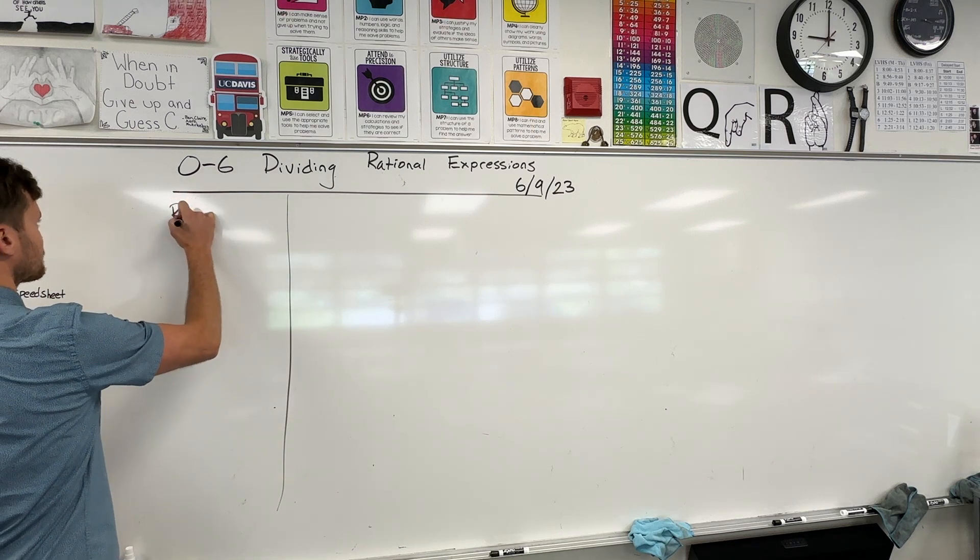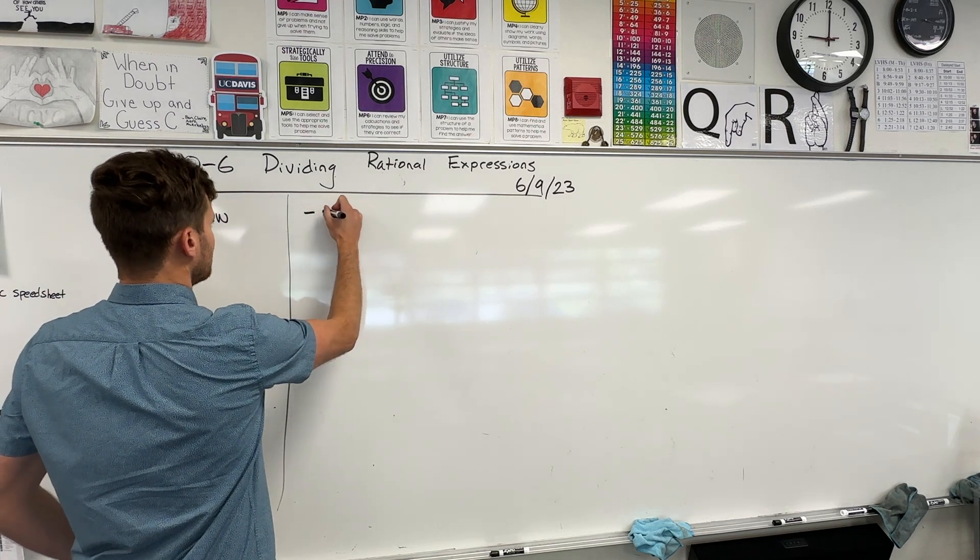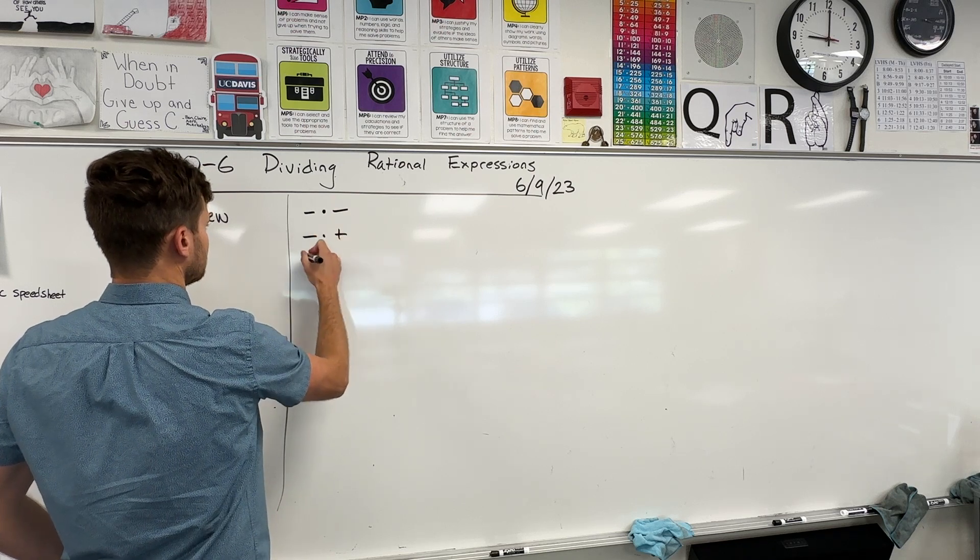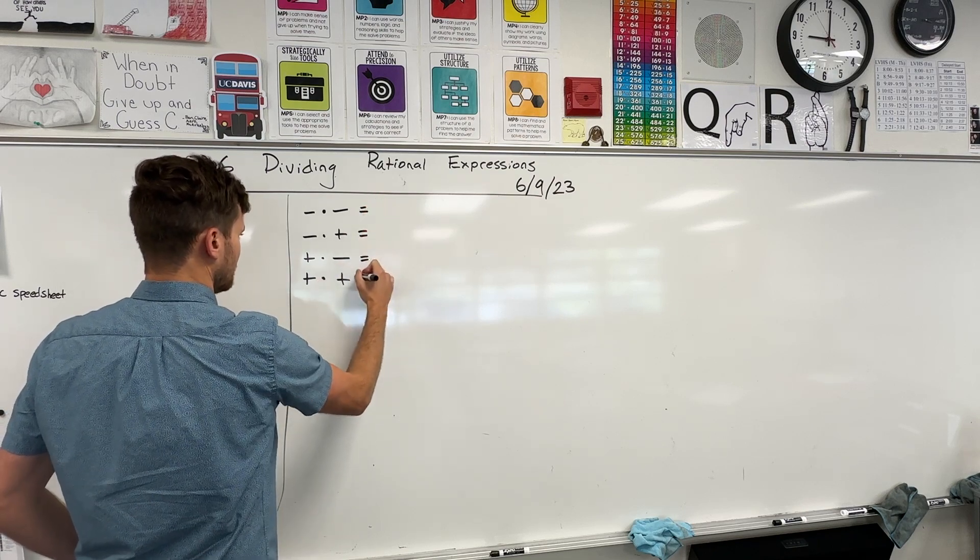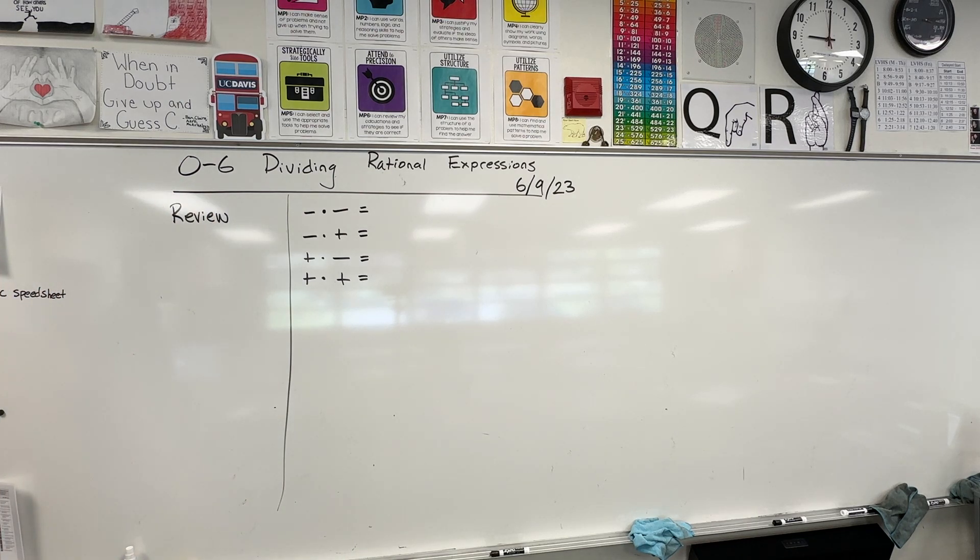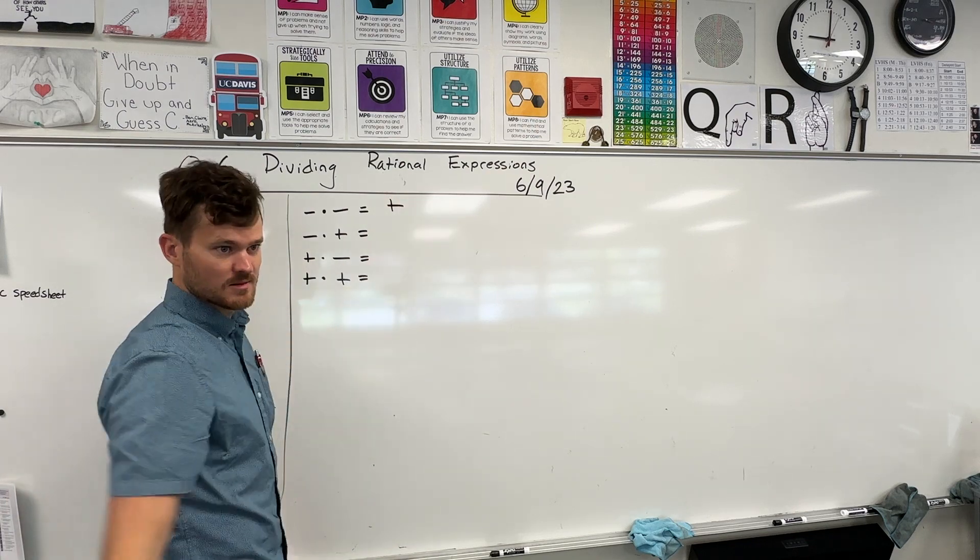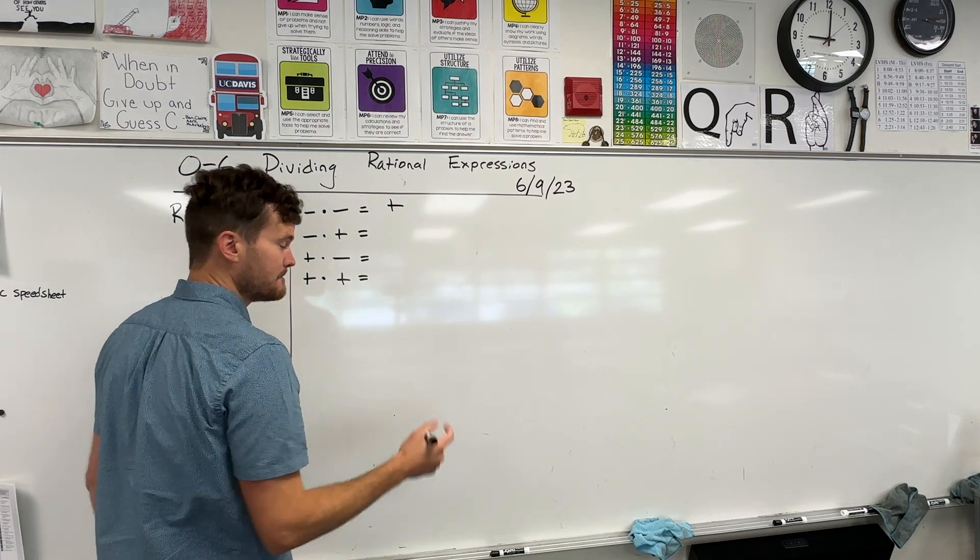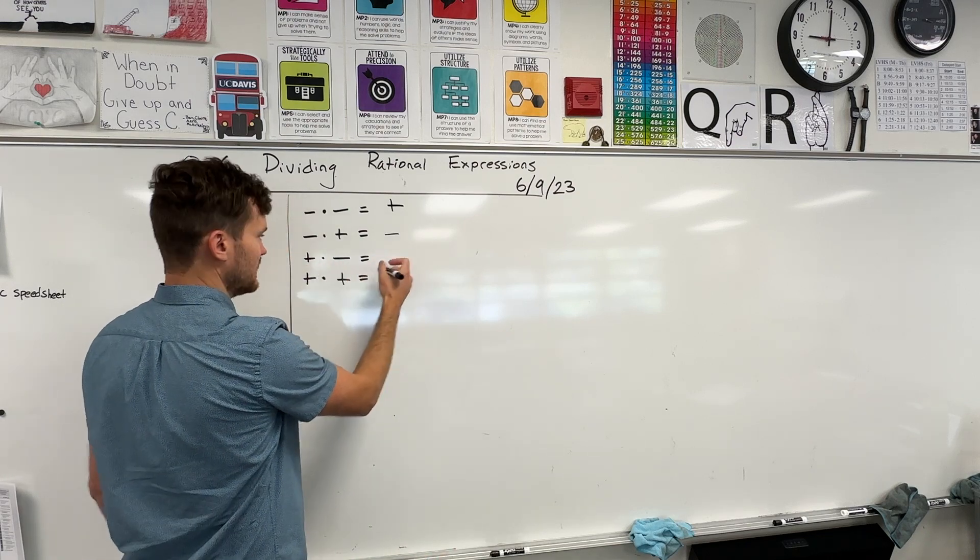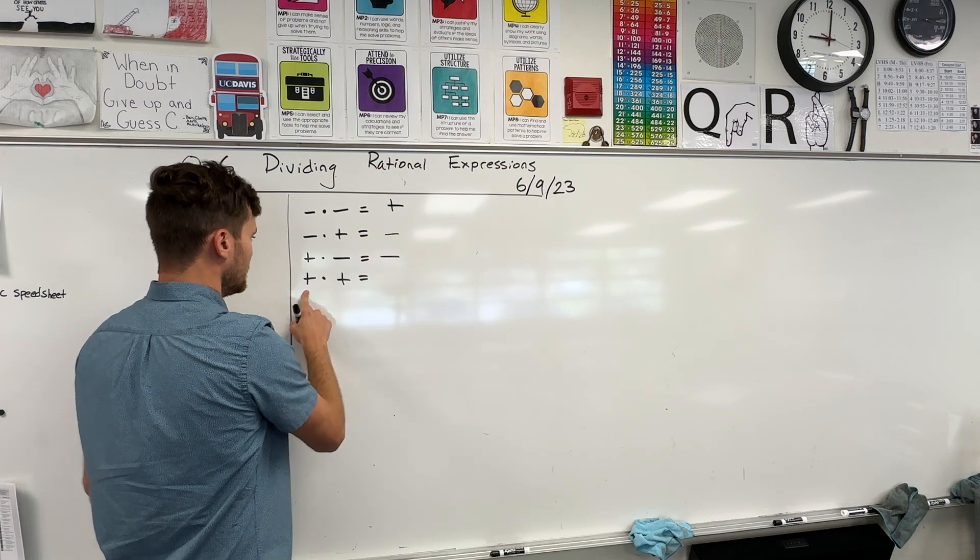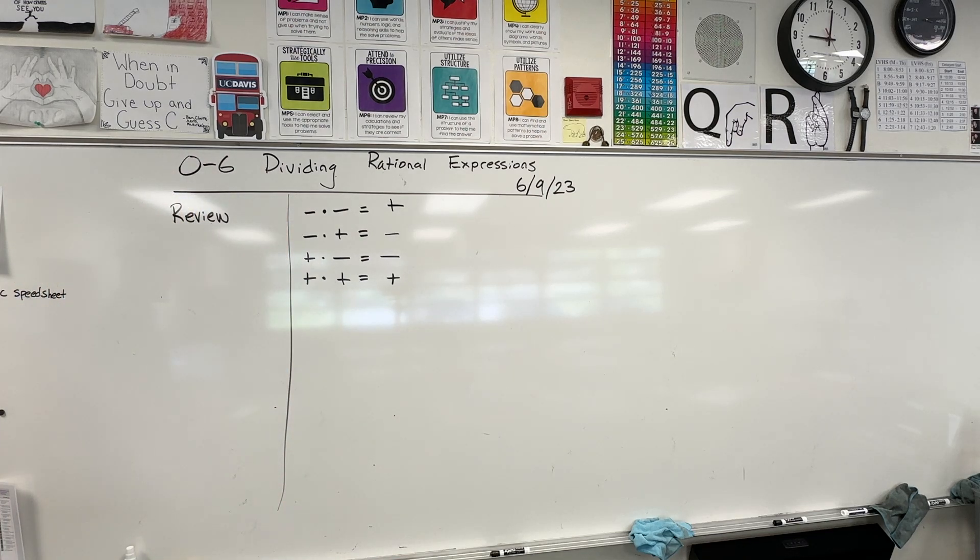All right. Let's do a review. I should have done this in our last lesson. When I do a negative times a negative, a negative times a positive, a positive times a negative, and a positive times a positive, what do we get for each of those multiplication problems? We're going to go really quick. Evan, negative times negative? Positive. Let's go with Felipe. Negative times positive? Negative. Very good.